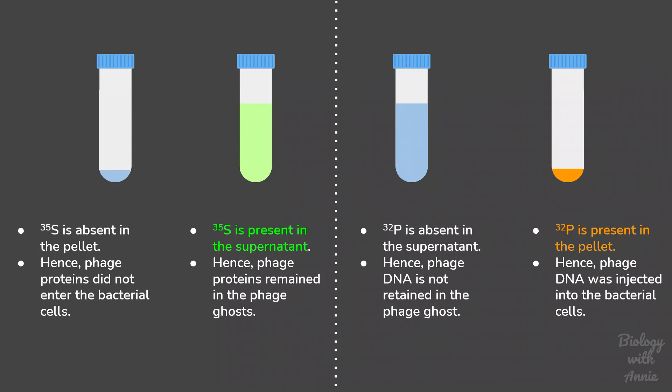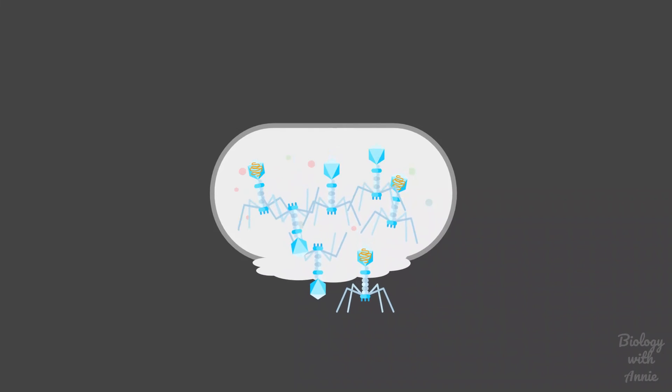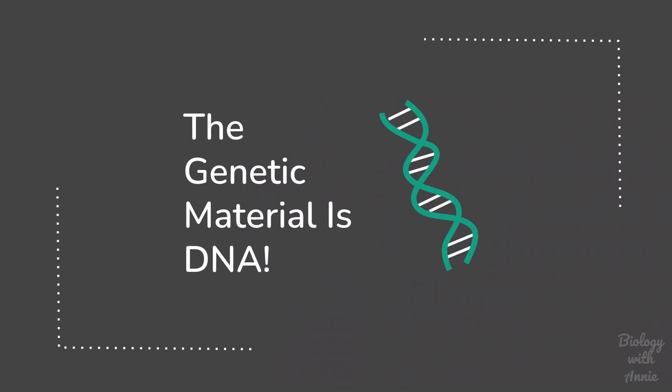Moreover, when the bacterial cells containing P-32 were allowed to grow for a longer duration, progeny phages were formed which emitted radioactivity. This showed that the phage DNA had been passed on to the next generation. These results helped confirm that DNA is genetic material.